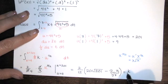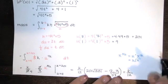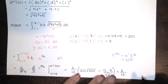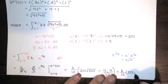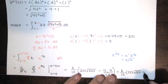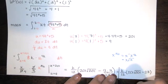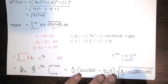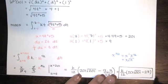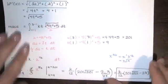So the mass of our wire that lies along the graph of R of T is K over 12 times 201 times the square root of 201 minus 27. And that's it. That's how we evaluate that line integral.